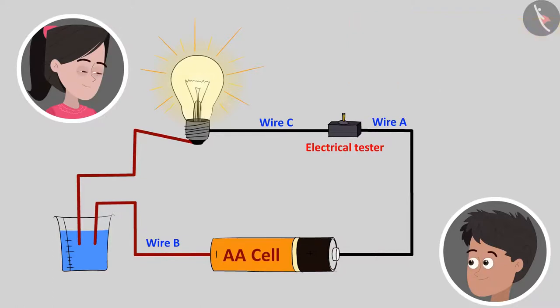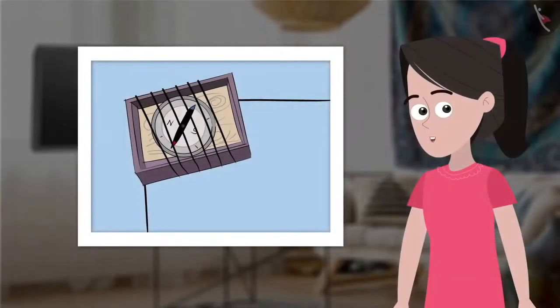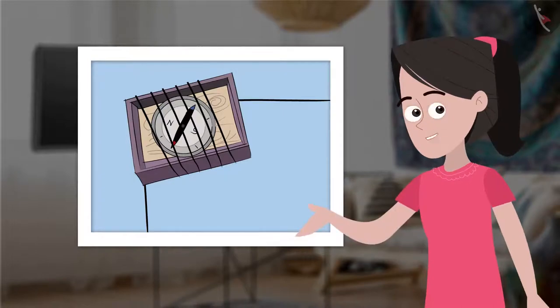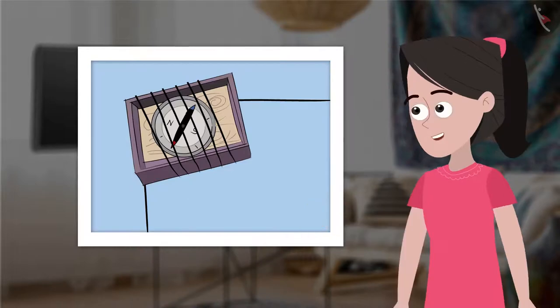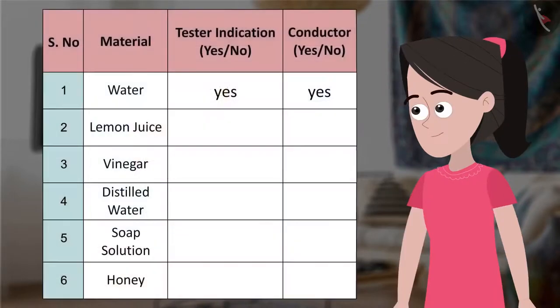Yes, this is awesome. Friends, you can try this activity with the other liquids that Bhaiya had asked us to collect earlier. However, remember to try this activity under guidance from an experienced elder. In this case, you are using the compass tester. You will see the compass needle deflects when the current passes through the circuit. You can record your observation for the other liquid in this table format. Serial number, material, tester indication yes or no, conductor yes or no.